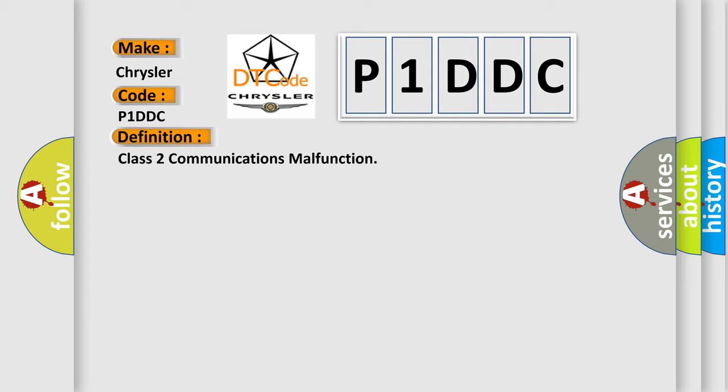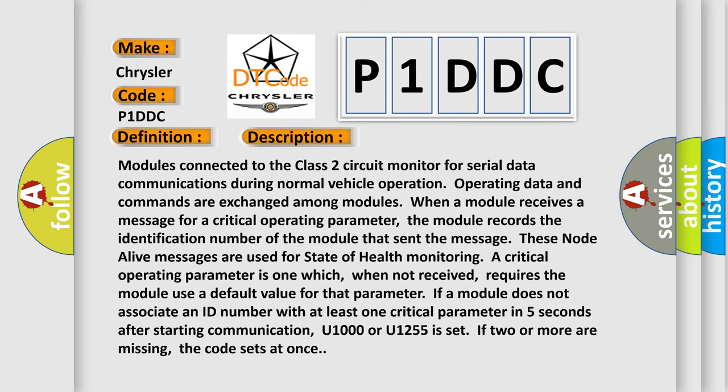And now this is a short description of this DTC code. Modules connected to the Class 2 circuit monitor for serial data communications during normal vehicle operation. Operating data and commands are exchanged among modules. When a module receives a message for a critical operating parameter, the module records the identification number of the module that sent the message. These node alive messages are used for state of health monitoring.